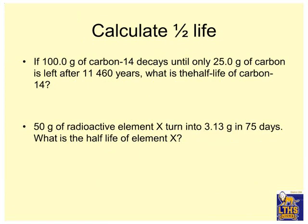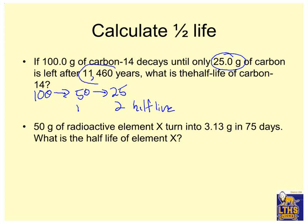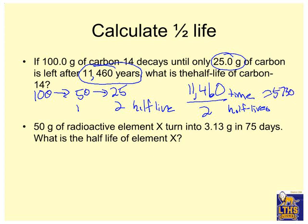Calculate the half-life. 100 grams carbon-14 decays until only 25 grams of carbon left after 11,460 years. What is the half-life of carbon-14? So until 25, 100 grams goes to 25. So 100. And this one would go to 50. We go to 25. So I had one, two half-lives. So if it took me two half-lives, if two half-lives are 11,460 years. So that means all I do is I take 11,460. That's my time divided by the number of half-lives. So time divided by half-lives. 11,460 divided by two is 5730. And that's years. By the way, that's a long time.